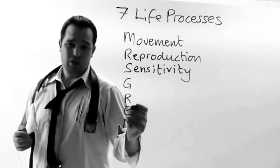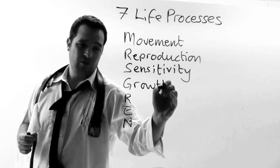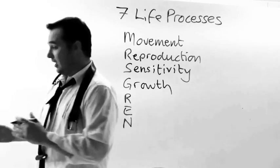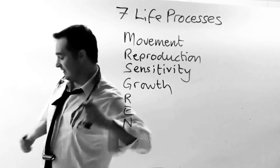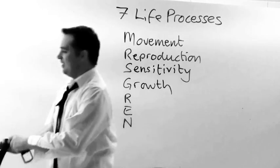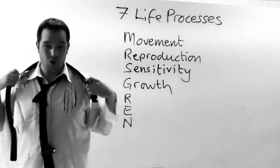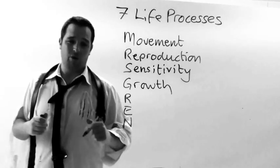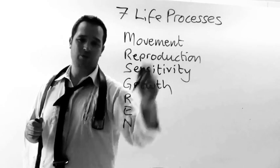The G stands for growth. For example, a lion cub growing into a full-scale lion — or anything that grows. This is one of the seven life processes.